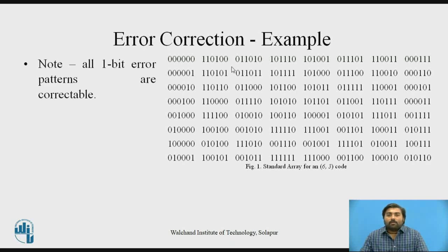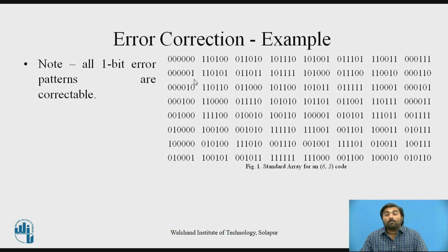All 1-bit errors in this standard array are correctable. For example, if the valid codeword 110100 is transmitted and 110101 is received, the error is in a single bit. This can be corrected with the help of the corresponding error pattern. All 1-bit error patterns in this standard array can be corrected.